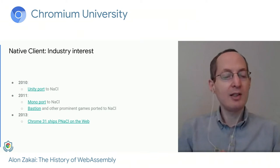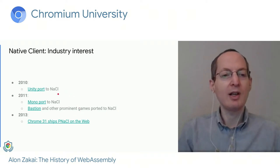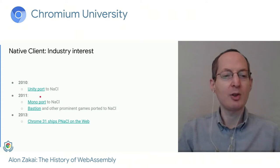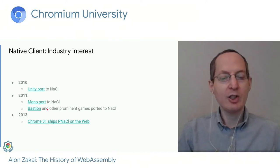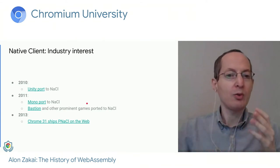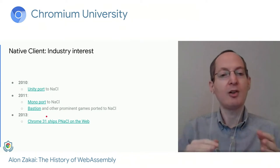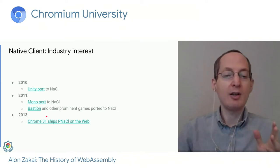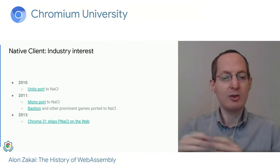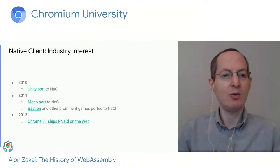Native Client got a lot of industry interest and worked really well. In 2010, Unity, a very important game engine, ported to NaCl. In 2011, Mono — a very important VM for the .NET family — did too, and later that year Bastion and other prominent games ported as well. This showed it works: you can port real-world content, it runs fast, and it's safe. So in 2013, in Chrome 31, Chrome shipped PNaCl on the web, turned on by default — you didn't need users to flip a flag.